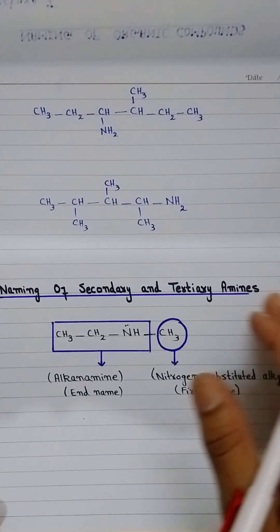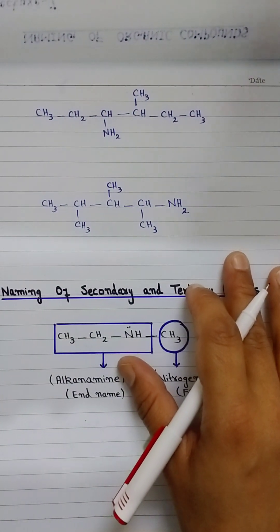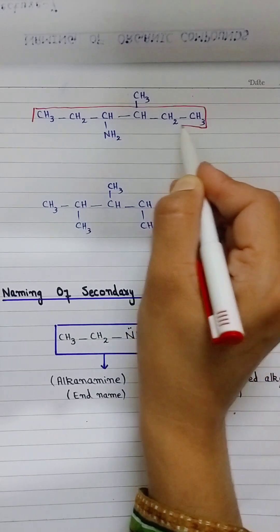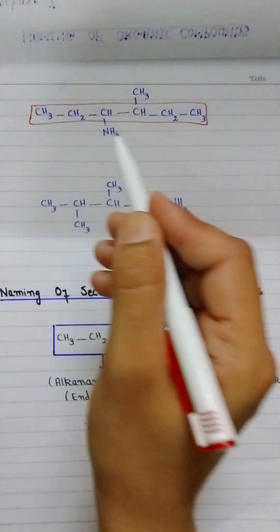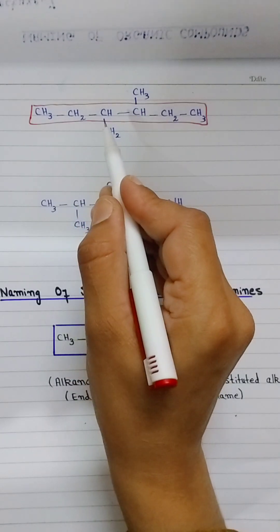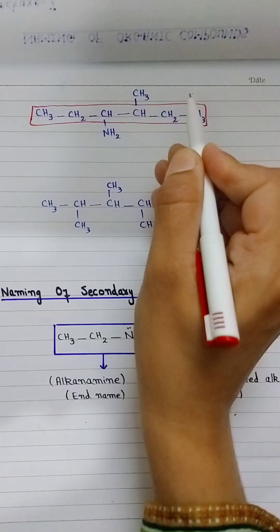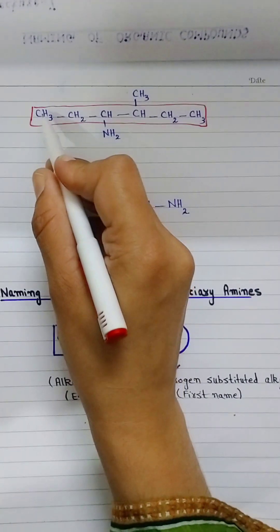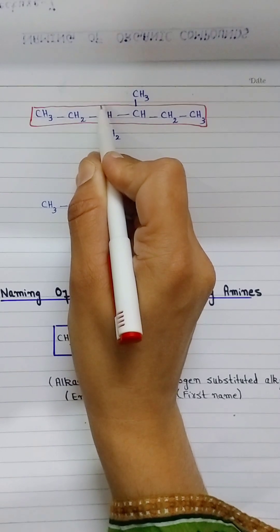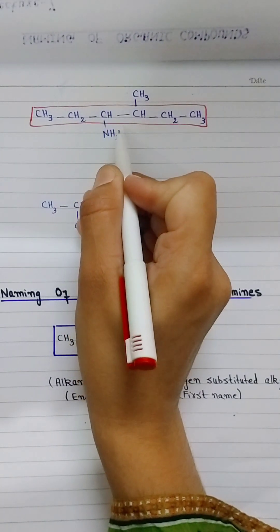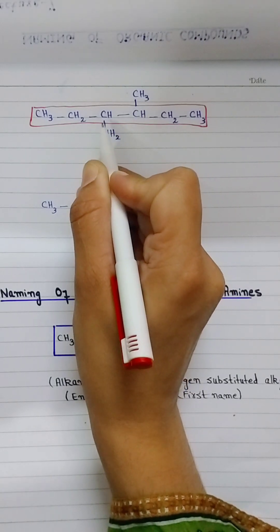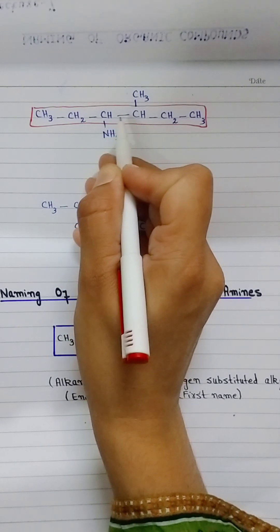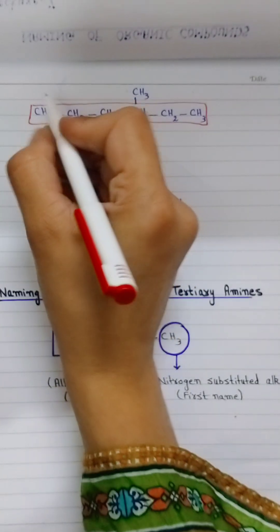In the second example, first select the longest continuous chain. Numbering can go from two sides because the amino group and the methyl group are at the same position. If numbered from the right, the methyl group is at position 3. If numbered from the left, the amino group is at position 3. When both substituents are at the same position, we number from the amino group's side.